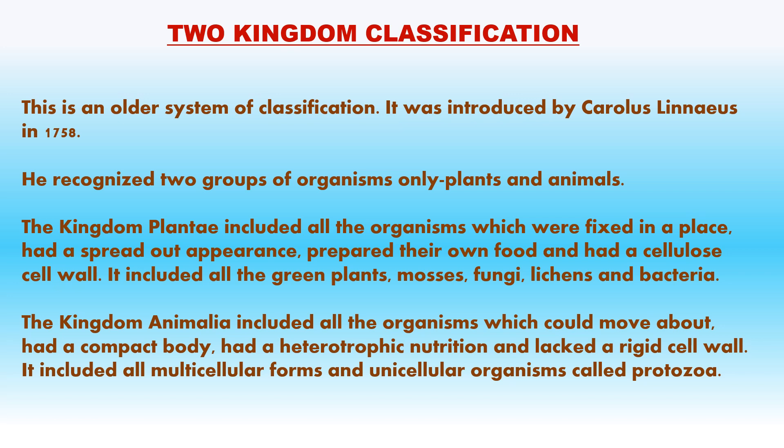Two Kingdom Classification is an older system of classification. It was introduced by Carolus Linnaeus in 1758. He recognized two groups of organisms only — plants and animals. The kingdom Plantae included all organisms which were fixed in a place, had a spread-out appearance, prepared their own food and had a cellulose cell wall. It included all the green plants, mosses, fungi, lichens and bacteria.